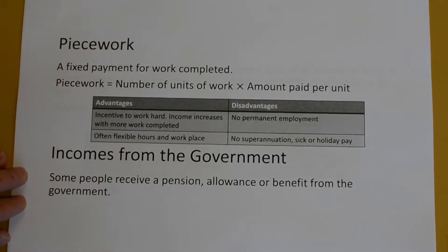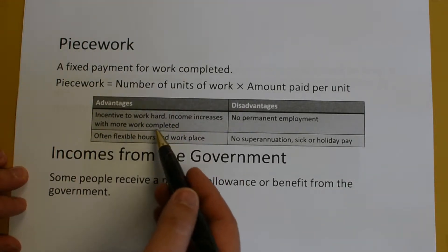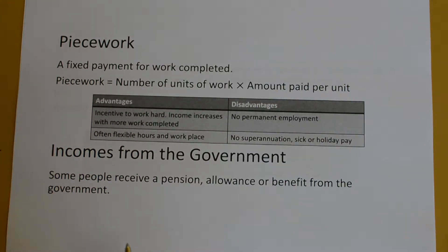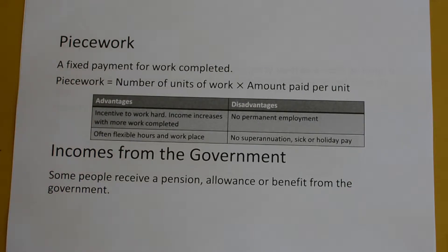Advantages of piecework include an incentive to work hard, as income increases with more work completed — the more you do, the more you'll get paid. Another advantage is flexible hours and workplace. Depending on what you do, you might be able to do it anywhere and at any time. There is no time limit for making a shirt; you can do it in the morning, afternoon, or at night, and assuming you have the tools at home, you could do it at home or at work.